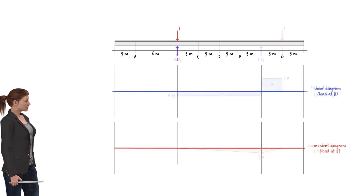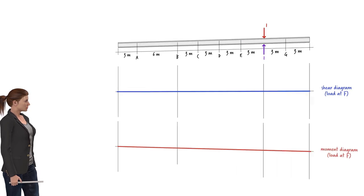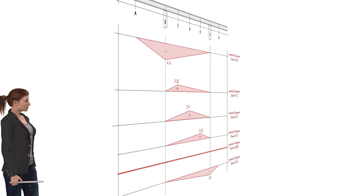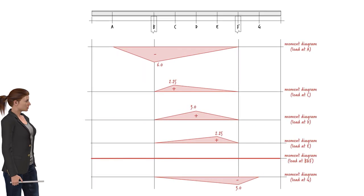When the unit load is at G, we get those shear and moment diagrams. When the unit load is at B or F — the support points — shear and moment in the girder are zero. Here are all the shear and moment diagrams we just constructed. Collectively, these diagrams enable us to quickly construct shear and moment influence lines for any point on the girder.